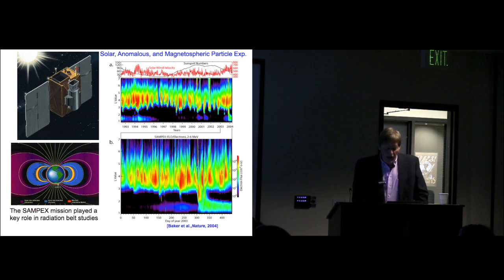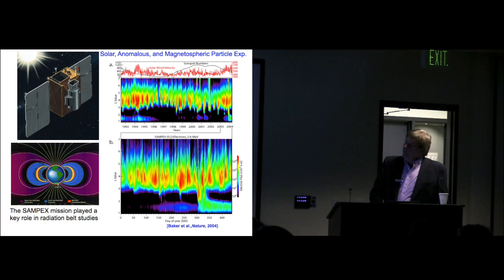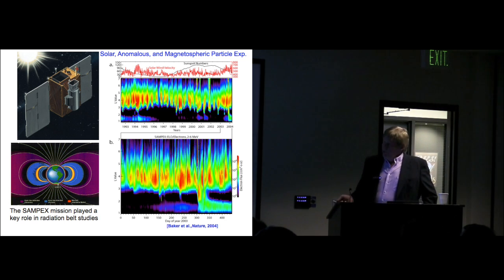Going back to our diagram, there have been several missions that folks here in the lab have been involved in that have played a key role in understanding the particles and fields aspects of the magnetosphere. One I like to focus on is SAMPEX, the Solar Anomalous Magnetospheric Particle Explorer. This started when I was at NASA Goddard. It was the first of the small explorer missions of NASA. This small spacecraft was launched into a polar low-Earth orbit, and the goal was to measure the Van Allen belts and monitor those radiation regions.